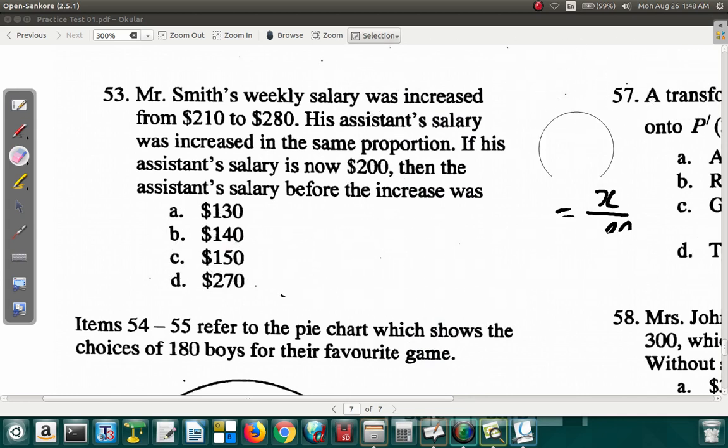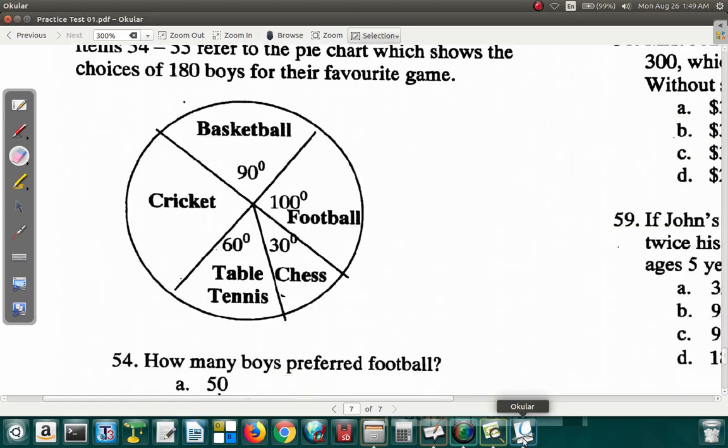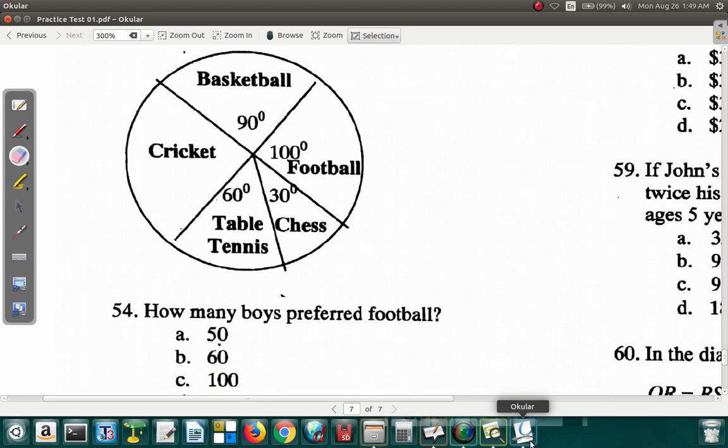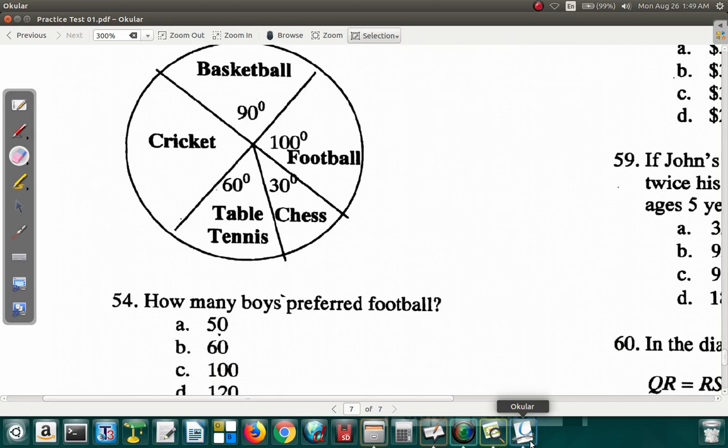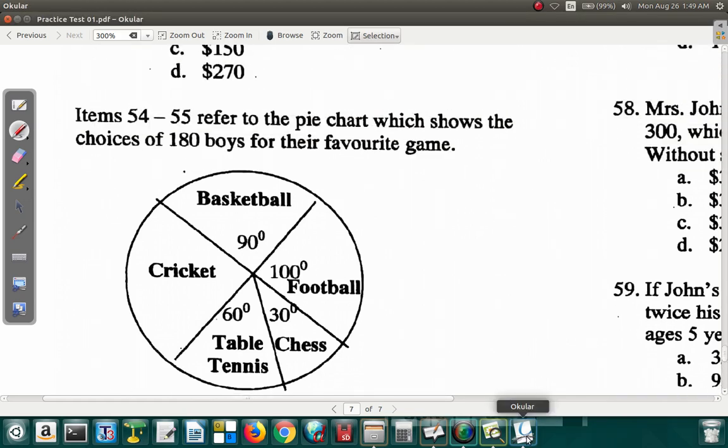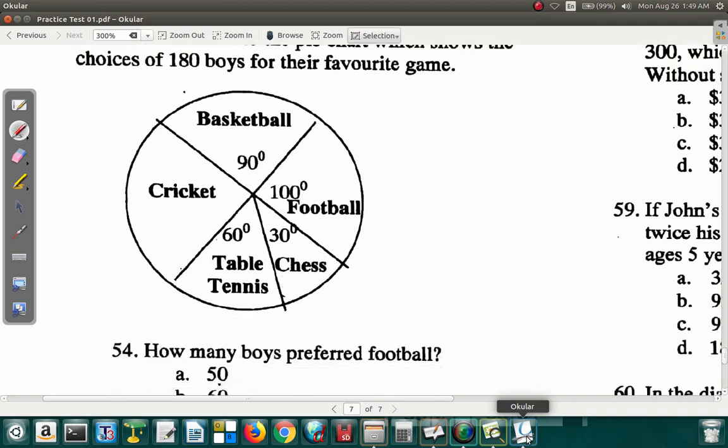Now let's move on to 54. Question 54 and 55 refer to the pie chart which shows the choices of 180 boys for their favorite games. 54 says how many boys preferred football? How many boys were there in total? There were 180 boys. How many of them prefer football?